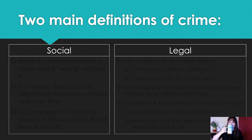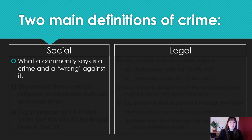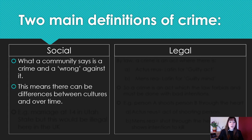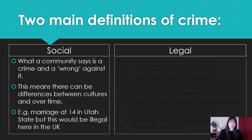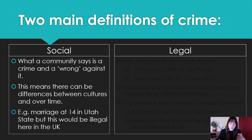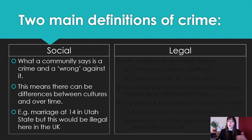There are two definitions of crime: the social definition and the legal definition. Social definition of crime: what a community says is a crime and a wrong against it. This means there can be differences between cultures and over time. For example, at 14 you can marry in the state of Utah in America, whereas that is illegal over here in the UK. What was a crime 20 or 30 years ago might not be today. Maybe ask your parents or grandparents if there are crimes that are new to them that weren't when they were children, or anything that was a crime when they were a child that's allowed today.